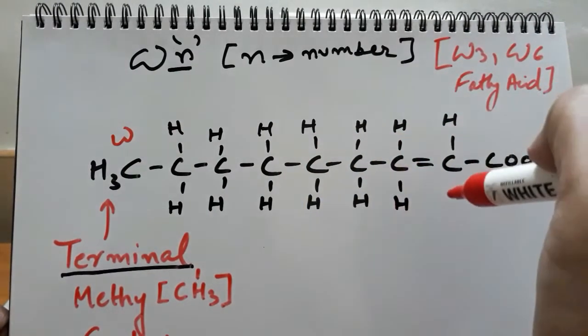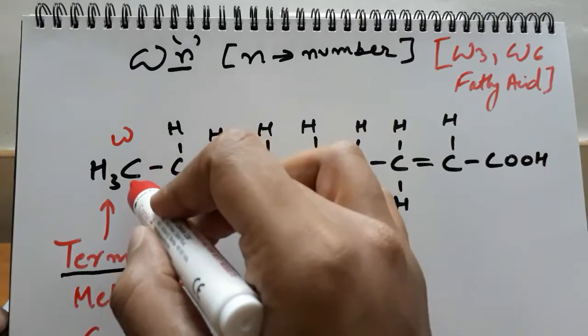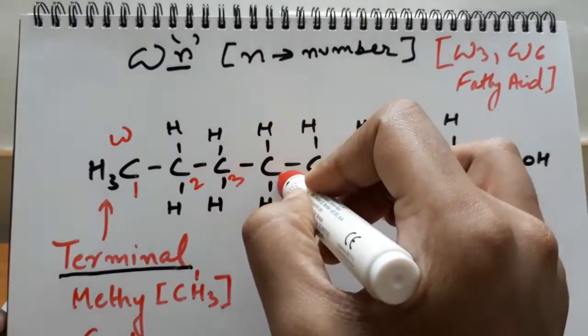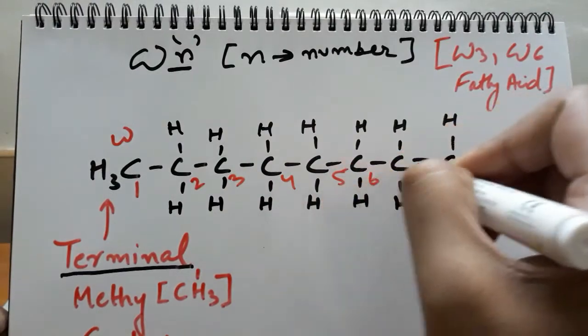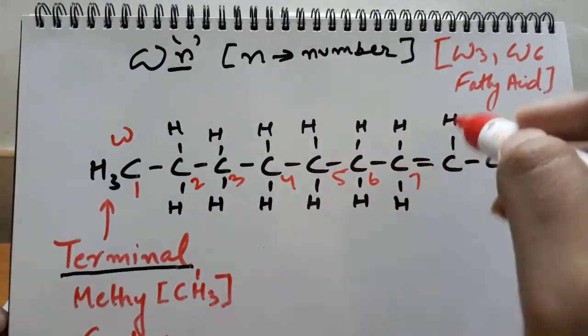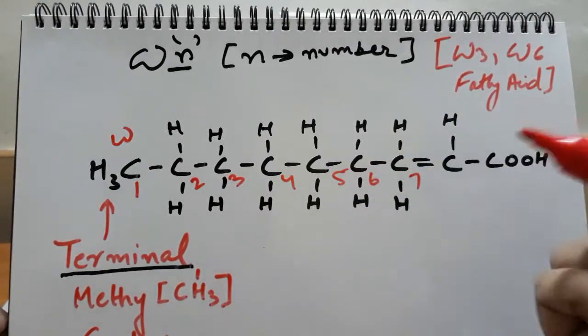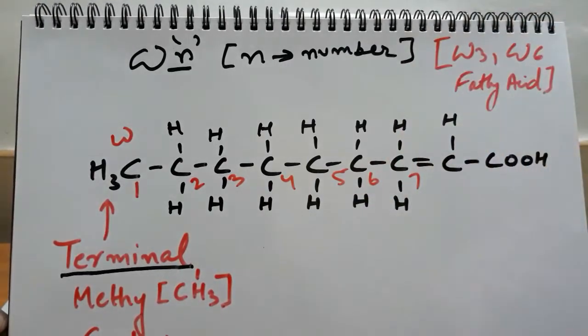the first double bond is attached. We start counting: one, two, three, four, five, six, seven. At the seventh carbon we have a double bond, which indicates the unsaturation in